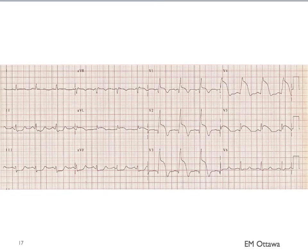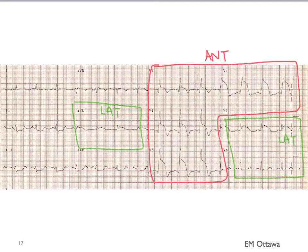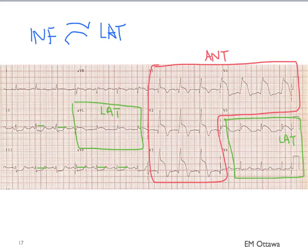What about this one? You notice that there are ST elevations in the anterior leads and the lateral leads. Do you see any ST depression? You can see ST depressions in leads 2, 3, and AVF, corresponding to the inferior part of the heart. That makes sense because the inferior part of the heart reciprocates with the lateral ST changes. In a standard 12-lead EKG we don't do posterior leads, but if we were to do them using a 15-lead, we would be able to see ST depression in the posterior leads.